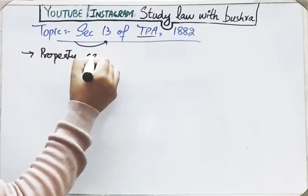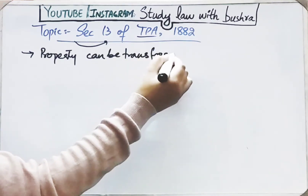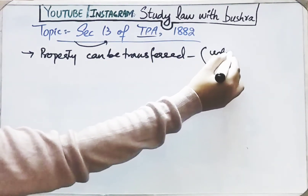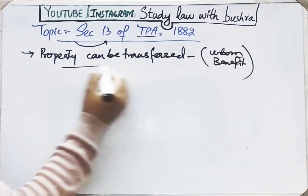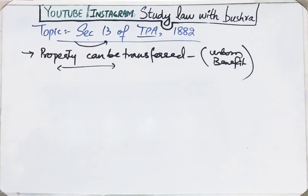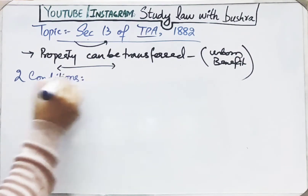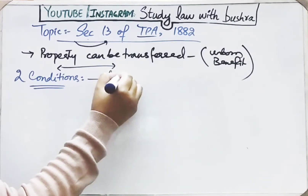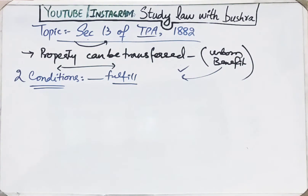Section 13 says that you cannot directly transfer property to an unborn person. But Section 13 says that property can be transferred for the benefit of an unborn person, but subject to certain conditions. To transfer property you must fulfill two conditions according to this section. Only when these conditions are fulfilled can property be transferred to an unborn person.